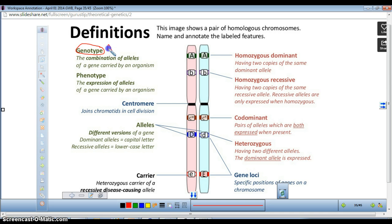Remember, homozygous dominant. This individual here is homozygous dominant for the A allele.